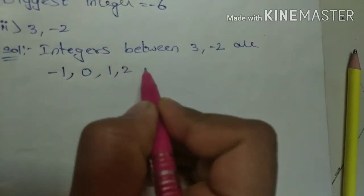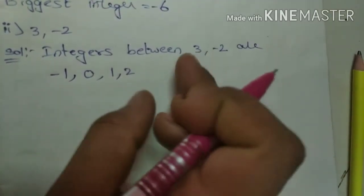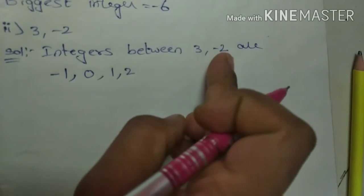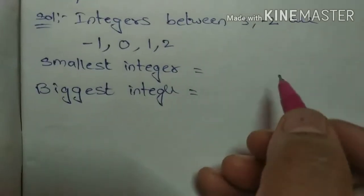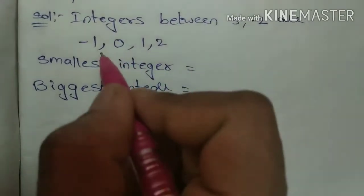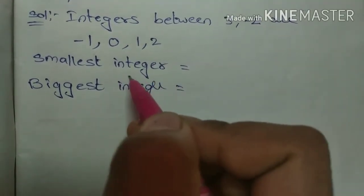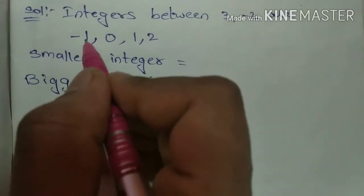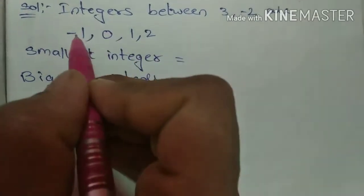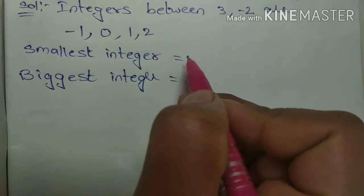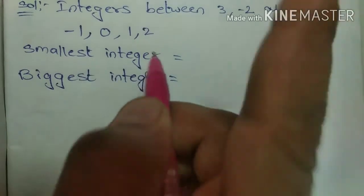So: one, two. That's all. Don't write three again. We should write only integers in between these two. Don't write three and don't write minus two. Now we should find out the smallest integer and biggest integer. Here minus one is the only negative — the remaining are positive integers. Which one is on the utmost left? That is the smallest integer. So minus one is the smallest integer. Compared to zero and positive numbers, minus one is the smallest. And two is the biggest integer.